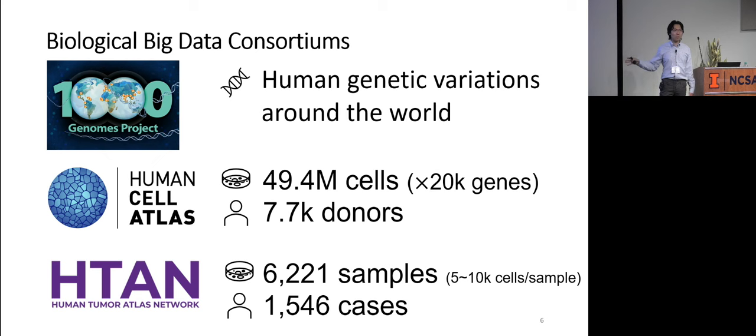Beyond healthy human donors, there are also consortiums for diseases. Most prominent one might be cancer. The H10 is the Human Tumor Atlas Network. There are more than 1,000 cases get sampled. And for each sample, we usually have 5 to 10 kilo cells. And of course, all the cells will have these genes.